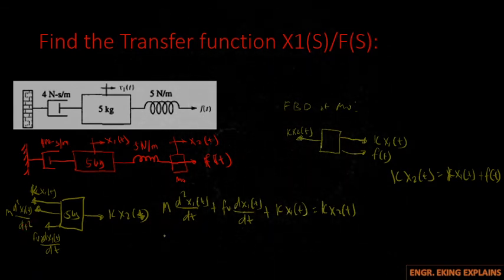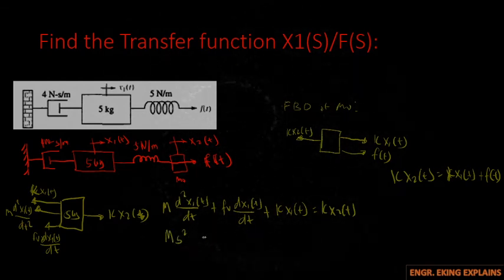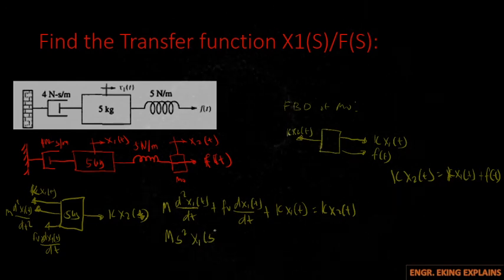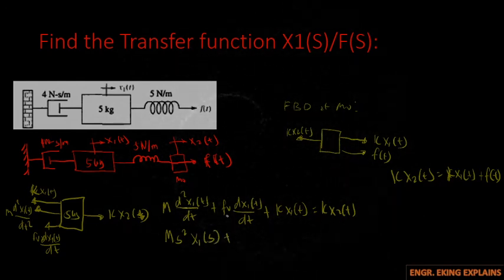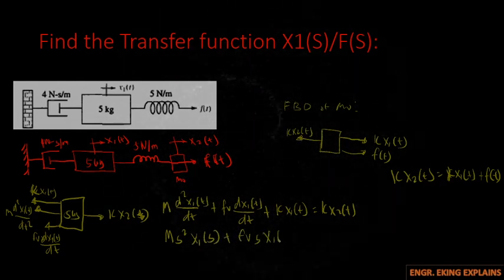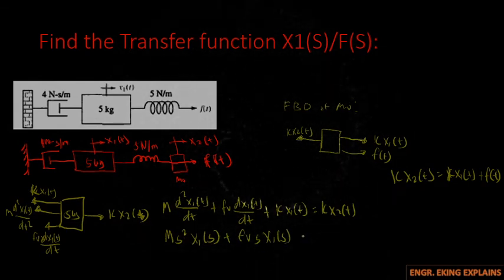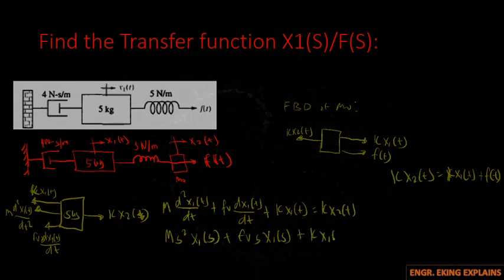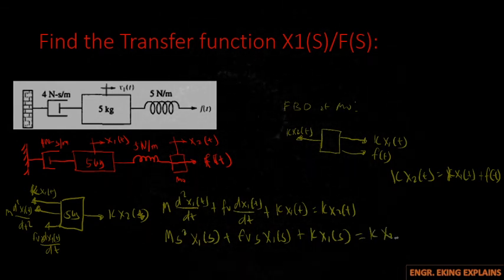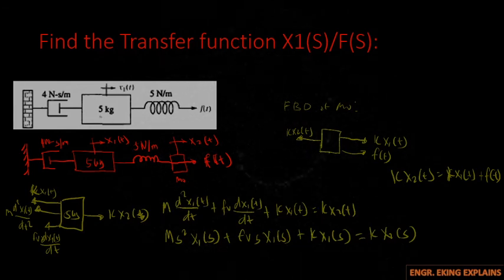Taking the Laplace transform, for the mass term this becomes m·s², which equals x1(s). For the damper term we have FV·s · x1(s). This is coming from the table. So we have K · x1(s) = K · x2(s).